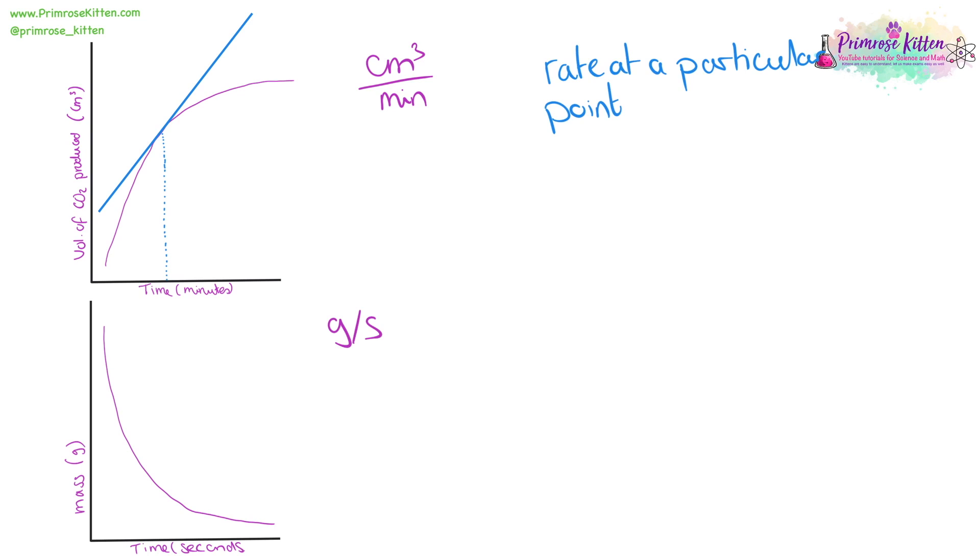If you want to find the rate at a particular point, say two minutes or five minutes, you need to draw a tangent, which is a straight line that touches the curve just at that point. Not at any other point, just at the point you're interested in. Then you need to work out the gradient of that line. To work out the gradient, you need to draw a triangle. Bigger triangle, the better. And we need to work out the change in up divided by the change in across. And your units, you need to take from the graph.